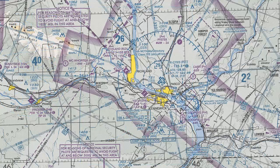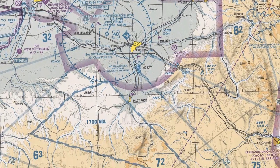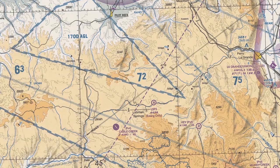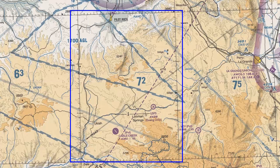Now let's see what happens with natural obstacles. Moving south to a new quadrant that has nothing but natural obstacles, we can see that the Maximum Elevation Figure is 7,200 feet. We start the same way — finding the highest elevation, which happens to be 6,850 feet.